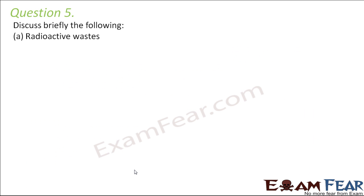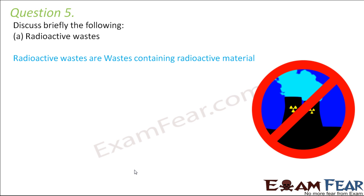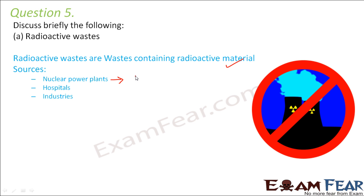Question number 5: Discuss briefly radioactive wastes. Radioactive wastes are those wastes which contain radioactive material. We get maximum radioactive wastes from nuclear power plants, which use uranium as the main fuel. Being radioactive in nature, uranium produces radioactive wastes. We also get radioactive wastes from hospitals where radioisotopes are used for diagnostic purposes, and also from industries.